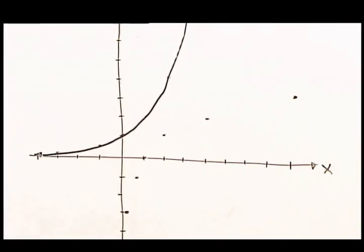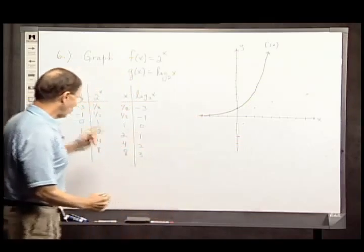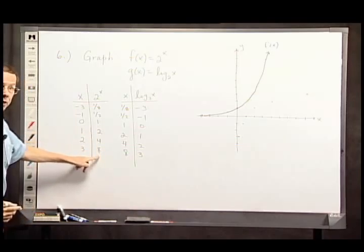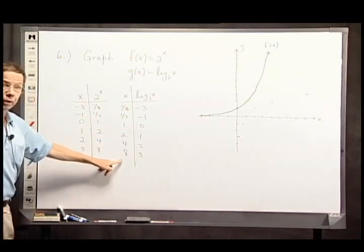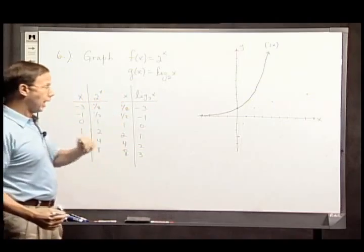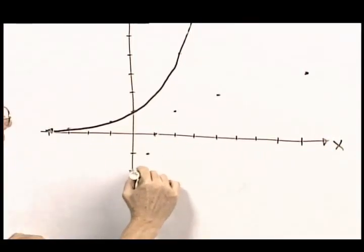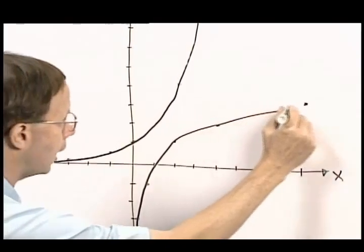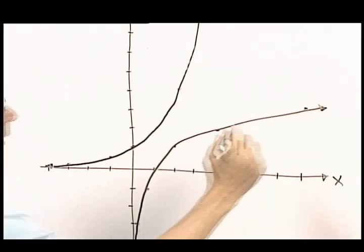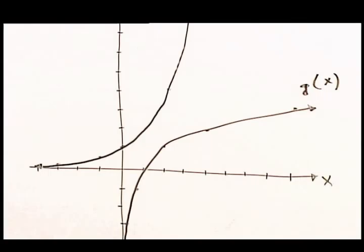The graph, just as this never quite reaches here, notice I will never have 0 or negatives here. The inputs to the log function have to be positive numbers. So, although we get very close to the axis, we never quite reach it. This is my log function, which I've identified as function g.